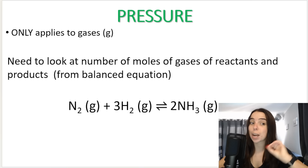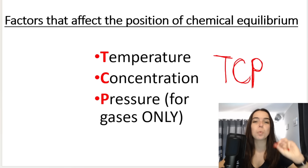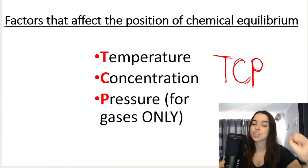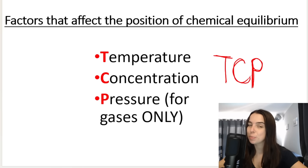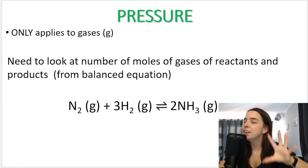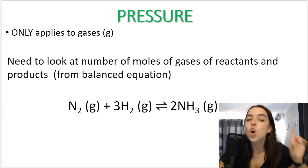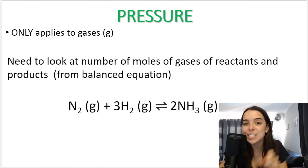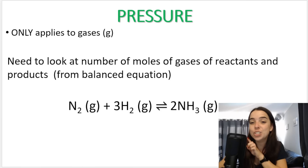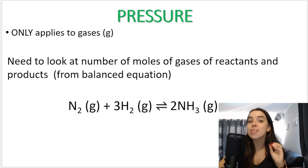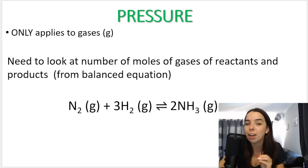In this lesson, we'll be looking at pressure as one of the three factors that affect the position of chemical equilibrium. It's very important to remember that pressure only applies to gases. So you need to look out for the little G because that means it's a gas, and that is when we can apply pressure.